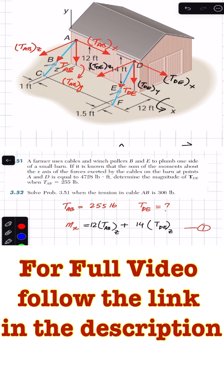Hello students, welcome back to Engineers Academy. Do hit the subscribe button if you are here for the first time. The problem says that a farmer uses cables and winch pullers B and E to plumb one side of a small barn.